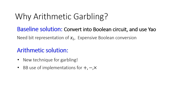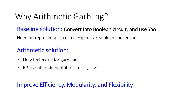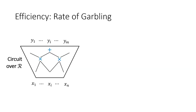In our work, we build upon the paradigm introduced in AIK and construct new arithmetic garbling solutions. We bring a new technique for garbling, and our solution makes black-box use of the ring operations, avoiding Boolean conversion. Overall, we improve efficiency, modularity, and flexibility over existing solutions for garbling arithmetic circuits. Before presenting our results, I'll define a metric for efficiency called the rate of garbling.